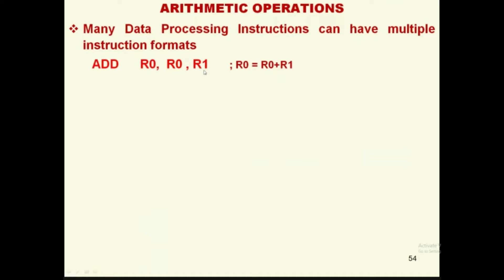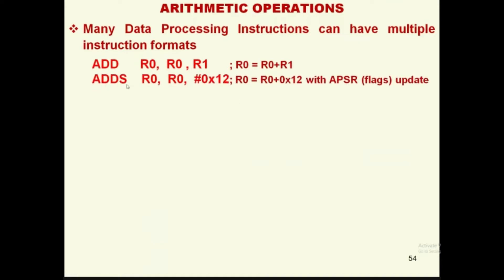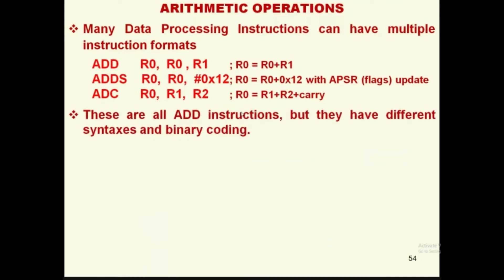ADD R0, R0, R1 is a simple add instruction meaning R0 = R0 + R1. The suffix S denotes updating the status register content in the APSR register. ADD with an immediate constant 12 stores the result in R0. ADD with carry means R0 = R1 + R2 + carry. These are all add instructions but they have different syntaxes and binary coding.